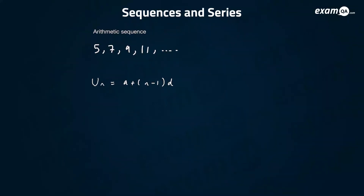The first type of sequence we're going to be going over is arithmetic sequences. Arithmetic sequences are the most basic type of sequences. It's literally when you go up by a constant number or go down by a constant number.